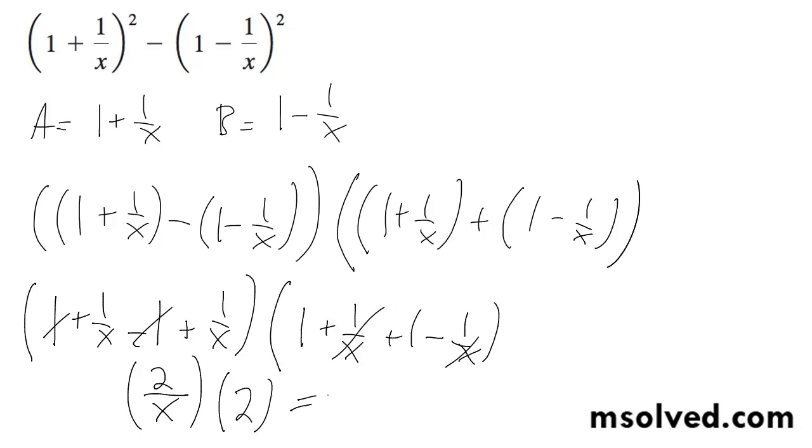So you multiply these together, you end up with 4 over x, and that's it.